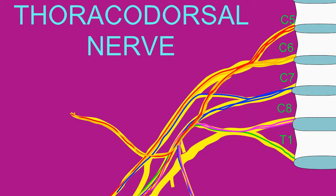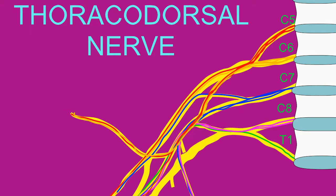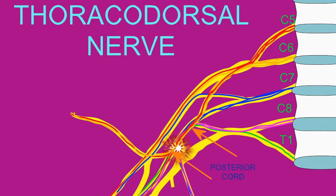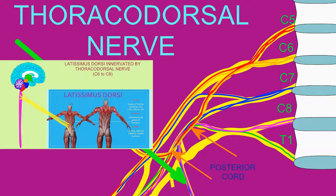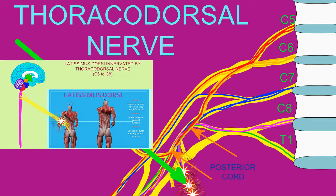The thoracodorsal nerve arises from the posterior cord of the brachial plexus, receiving ventral rami from C6, C7, and C8, and it innervates the latissimus dorsi muscle.